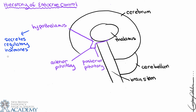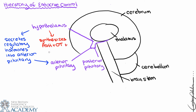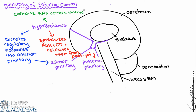One, it secretes regulatory hormones into the anterior pituitary, and we'll get into the specifics in a moment. Two, it synthesizes ADH and oxytocin and releases them from the posterior pituitary. And three, it contains autonomic nervous system centers that innervate the adrenal medulla. So anytime we have sympathetic activation, we can modulate the activity of the adrenal medulla and increase the release of epinephrine and norepinephrine into the bloodstream.